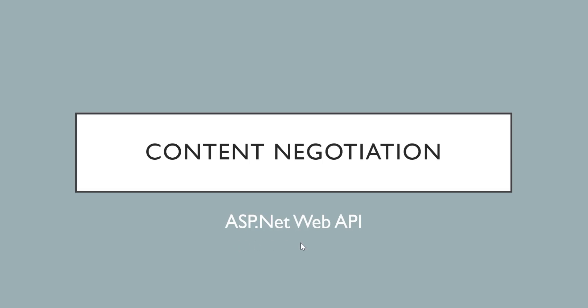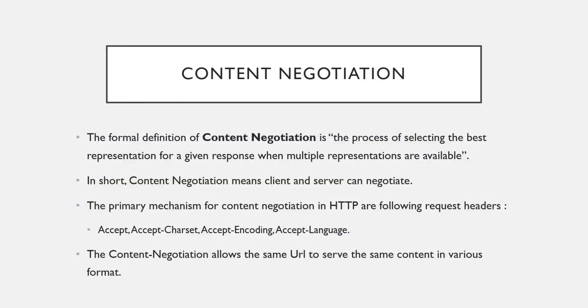Hello friends, welcome back. We are studying ASP.NET Web API. This video is about content negotiation, which is one more important term that is frequently used in Web API. First of all, we are going to see the formal definition of content negotiation. It is the process of selecting the best representation for a given response when multiple representations are available. Representation means how we can represent the data or output of a Web API request.